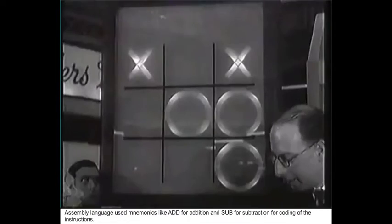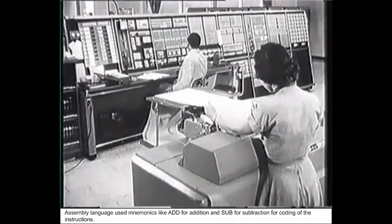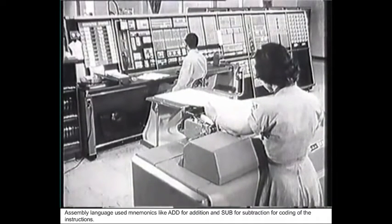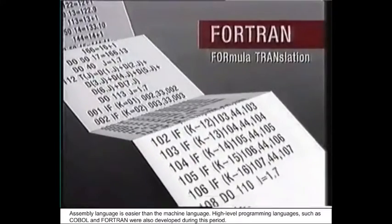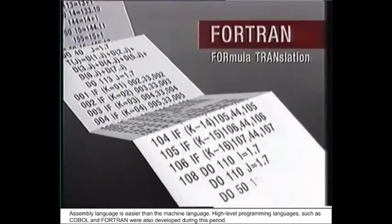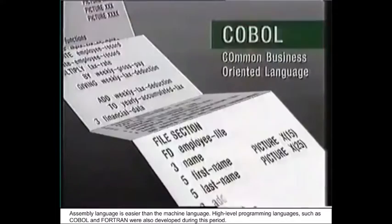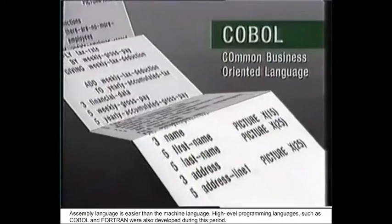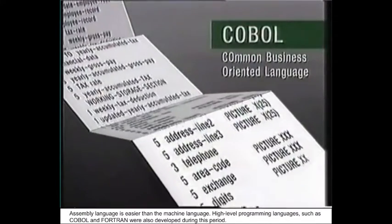Software technology: the instructions were written using assembly language. Assembly language used mnemonics like ADD for addition and SUB for subtraction for coding instructions. Assembly language is easier than machine language. High-level programming languages such as COBOL and FORTRAN were also developed during this period.